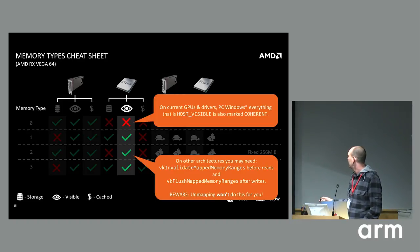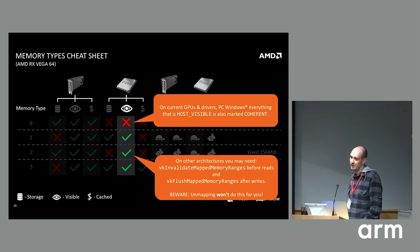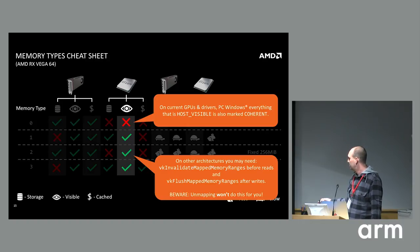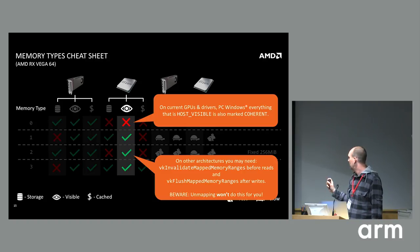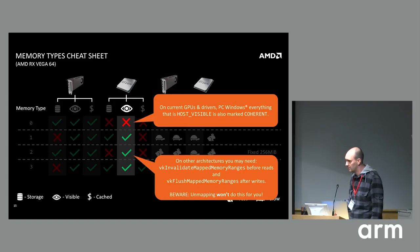A quick note about the coherency column: currently on PC Windows, everything we tested across all vendors marked host-visible is also marked coherent. So for Windows development this is glossed over. But on other architectures — Linux stacks, mobile — these functions may be your friend. After writing on the CPU you might need to flush mapped ranges to ensure coherency, and you need to invalidate ranges before CPU reads to avoid stale cache data. Unmapping buffers will not do this for you — you have to do it manually.